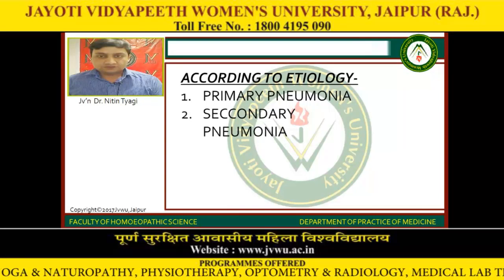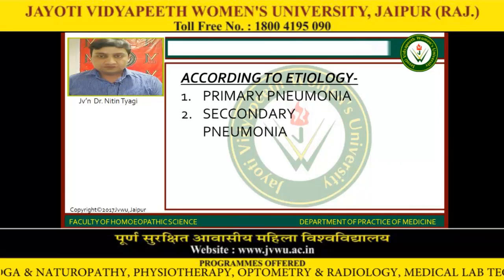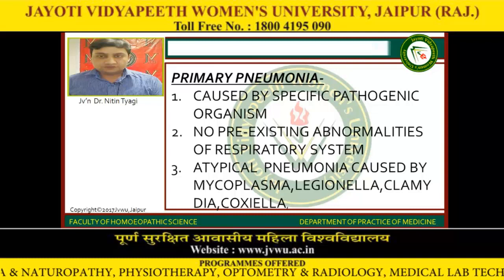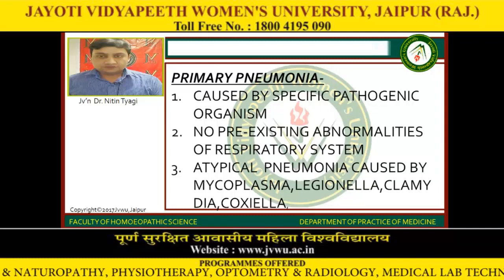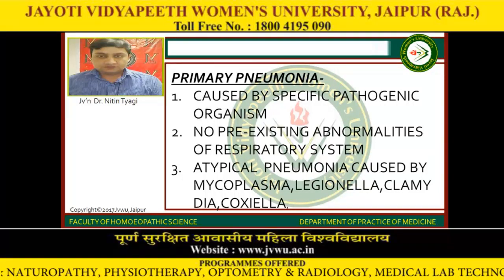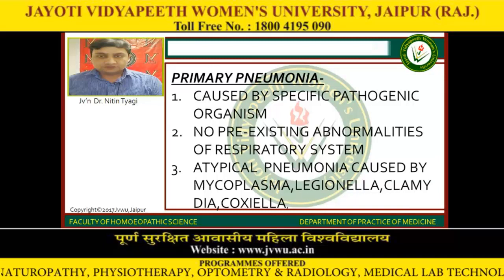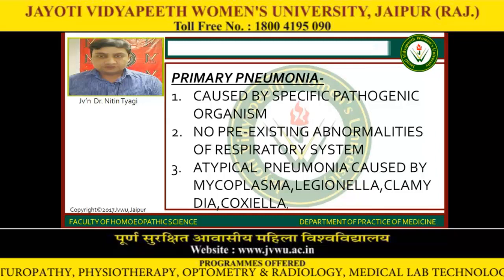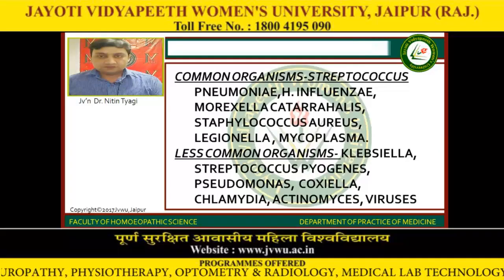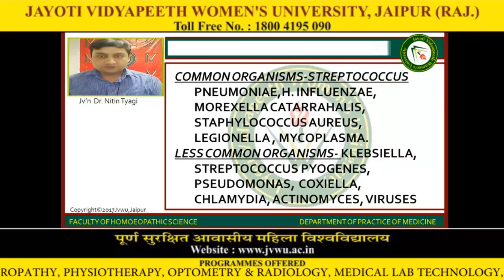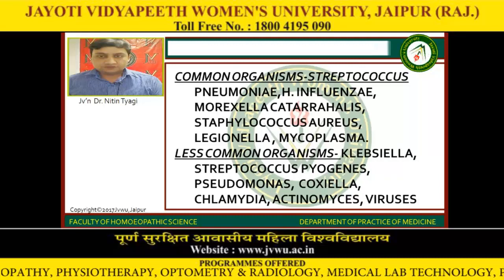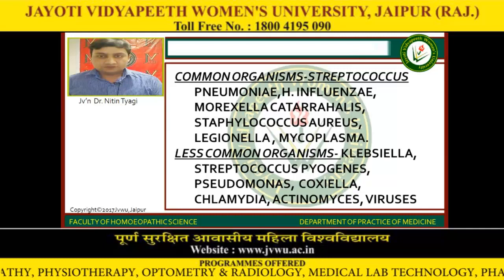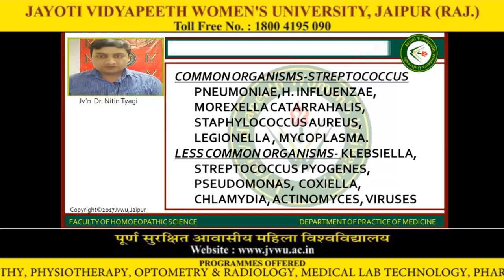According to etiology, pneumonia is divided into primary pneumonia and secondary pneumonia. Primary pneumonia is caused by a specific pathogenic organism with no pre-existing abnormalities of the respiratory system. Atypical pneumonia is caused by Mycoplasma, Legionella, Chlamydia, and Coxiella. The common organisms are Streptococcus pneumoniae, Haemophilus influenzae, Moraxella catarrhalis, Staphylococcus aureus, Legionella, and Mycoplasma.